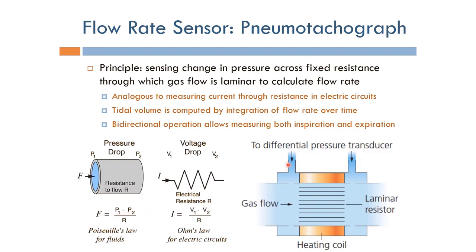We have two pressure sensors, one here and one there, across the laminar resistor. The difference between these two pressures over the laminar resistor will give us the flow.